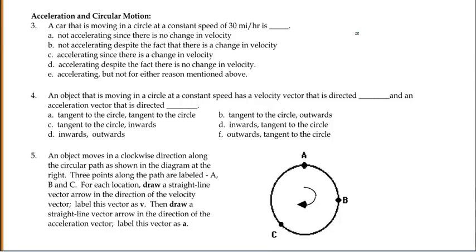Now, in circular motion, a good picture down here of an object that's moving clockwise around the circle. A car that's moving in a circle at a constant speed of 30 miles per hour. Now, at first, you would say, well, it's a constant speed, so therefore it's not accelerating.